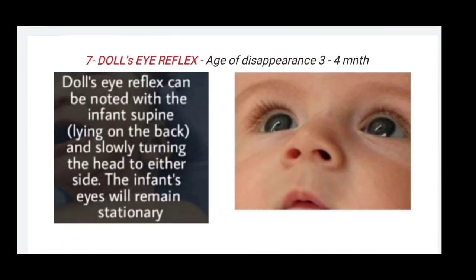Next is the doll's eye reflex, which disappears at three to four months of age. The doll's eye reflex can be noted with the infant in the supine position — lying on their back — and slowly turning the head to either side; the infant's eyes will remain stationary.